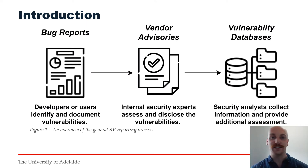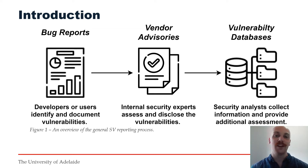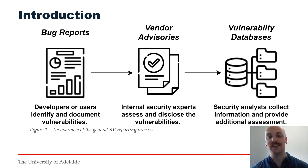Vulnerability reporting and disclosure aims to ensure that product vendors and users can fix or mitigate security flaws before the bad guys can exploit them. Just a few months ago, organisations around the world scrambled to patch for the log4j vulnerability after its full disclosure. Vulnerability reporting is a critically important process that lets users stay one step ahead. As such, organisations and security vendors will expend significant efforts towards a thorough reporting lifecycle.